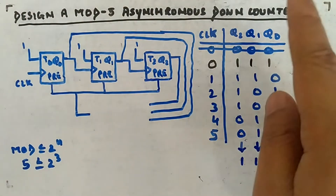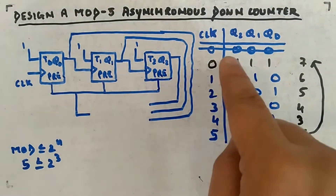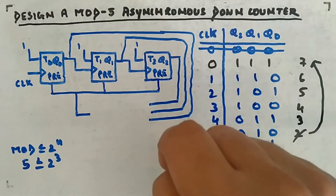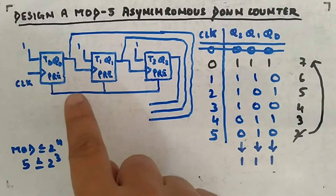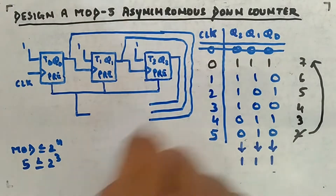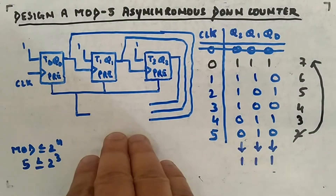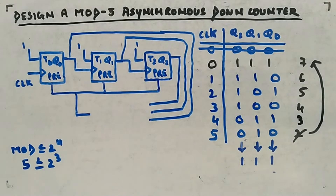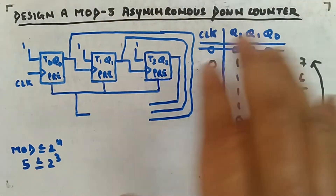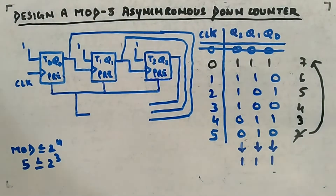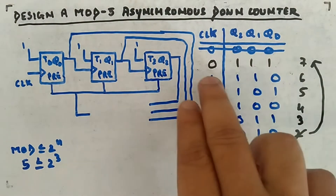One thing I want to mention: your initial state won't be 0,0,0 because you are using preset to clear your flip-flops. If you clear with preset, initial state will be 1,1,1. This only applies when clearing with preset — if you are clearing with clear (reset), then initial state will be 0,0,0. In down counters using preset, assume initial state 1,1,1 at the 0th clock cycle.